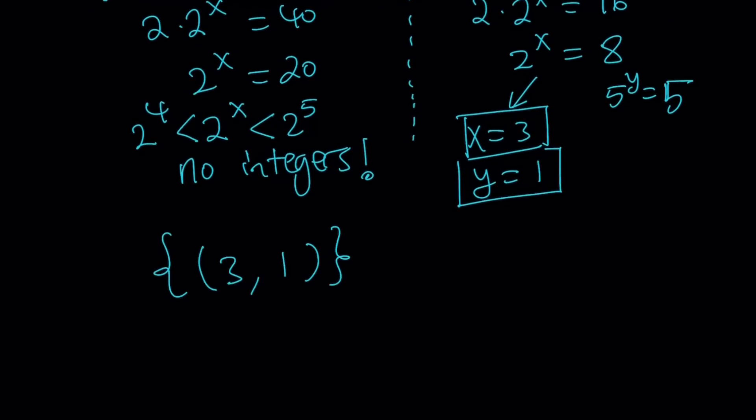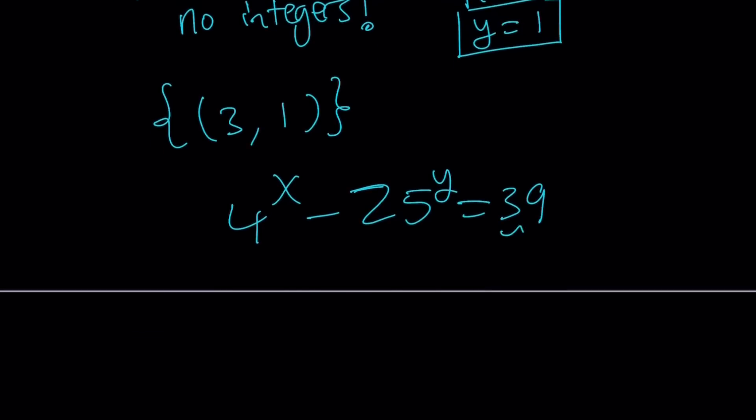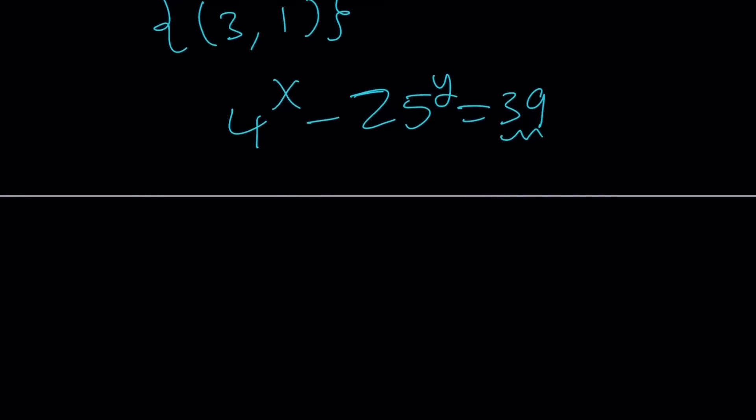Let's go ahead and take a look at the graph of this relation, which is 4 to the x minus 25 to the y equals 39. Now, I know some of you are asking the question, what if this isn't like 375? In that case, you can still look for solutions. You can look for upper and lower bounds. You can also use modular arithmetic. I also made a video on modular arithmetic. There are ways to solve it, but some equations are harder, obviously, than others.